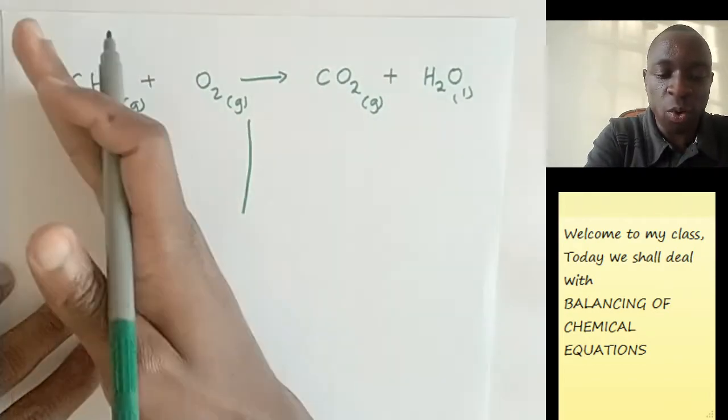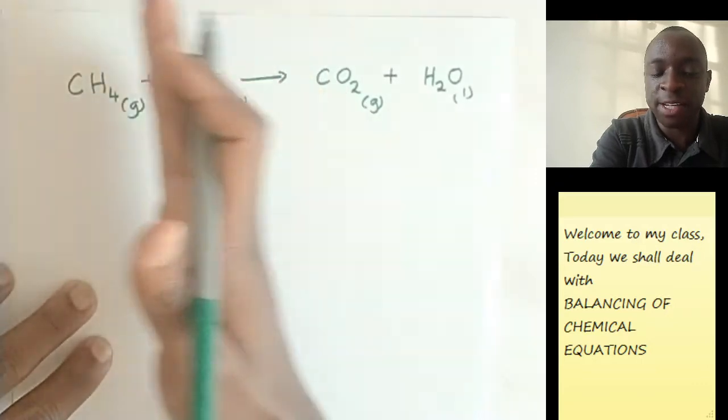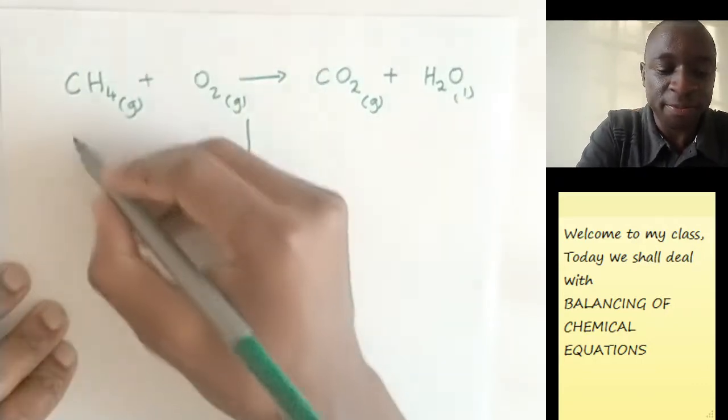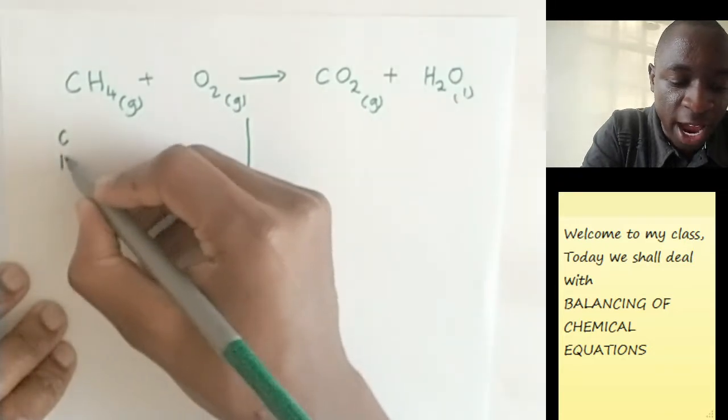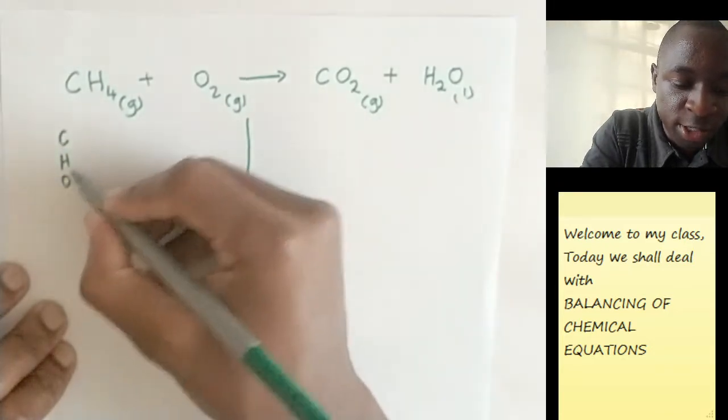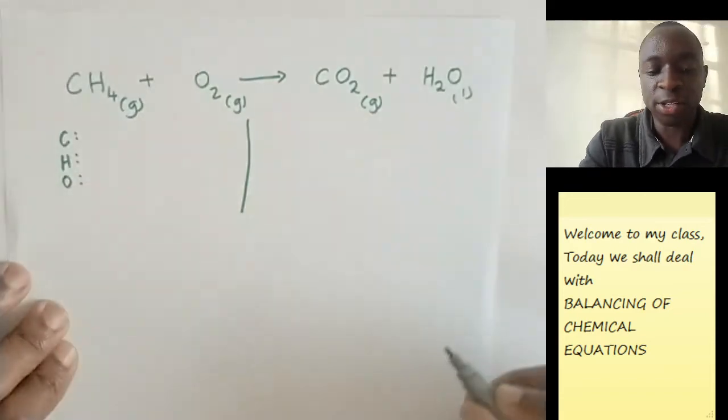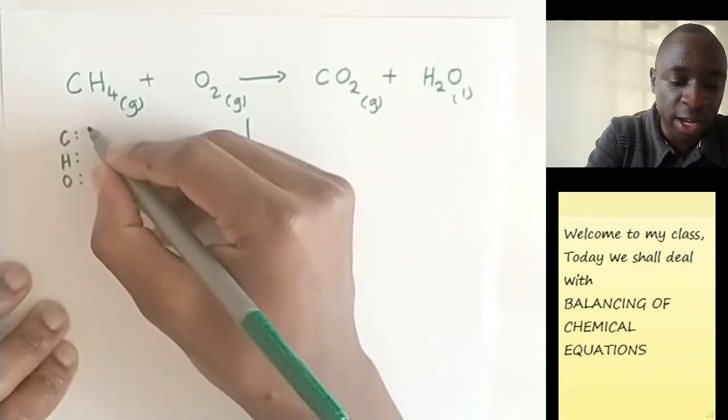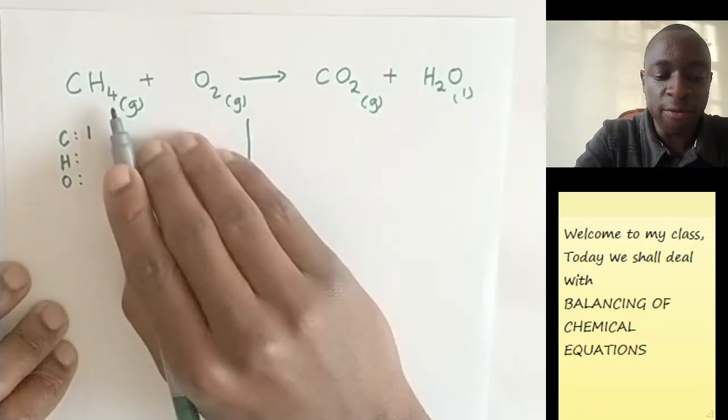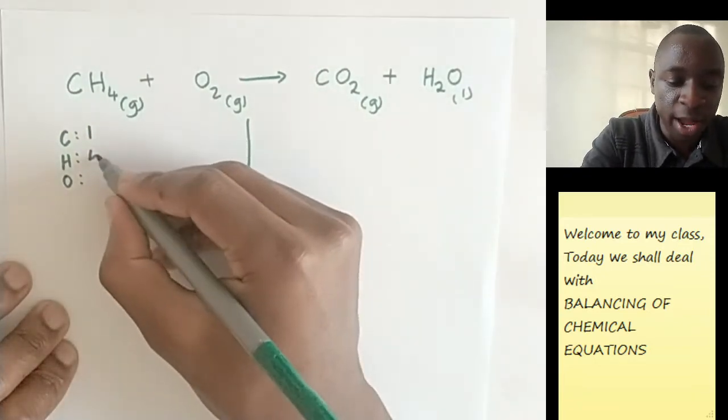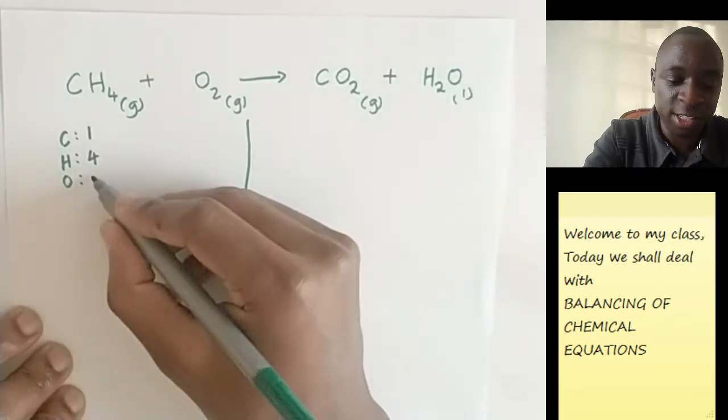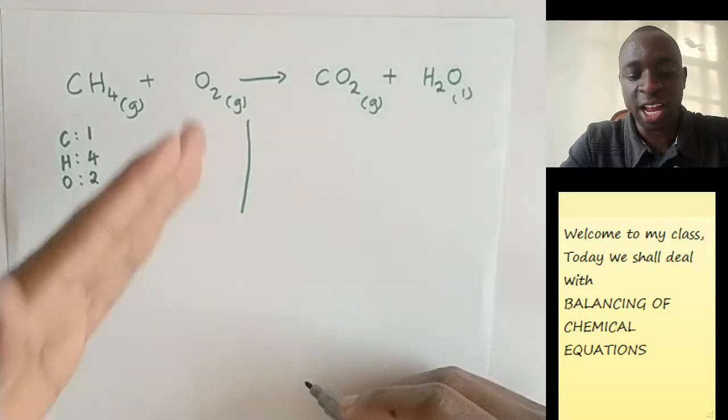So now you check on what elements are present on the left hand side, which is usually the reactant side. So here we have carbon, hydrogen, and oxygen. Let me check each of them. What numbers do we have? Carbon is one, so we only have one carbon. We have four hydrogens, so I put a four there. And also we have just two oxygens, so we have that one. So two oxygen atoms.